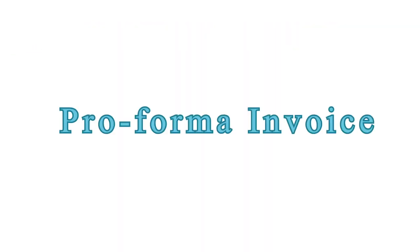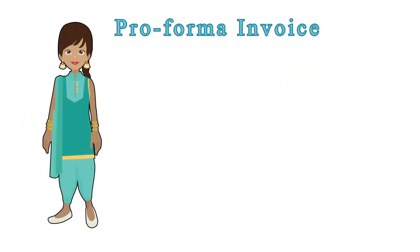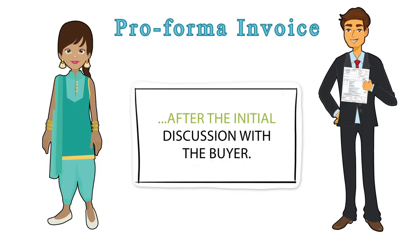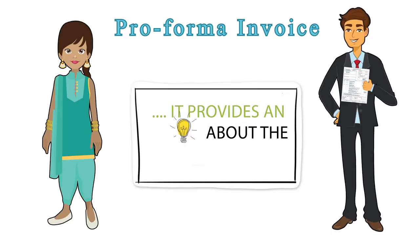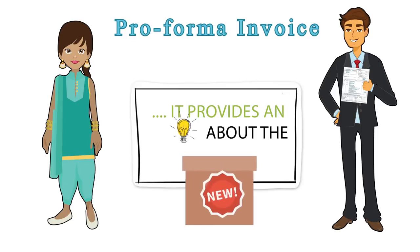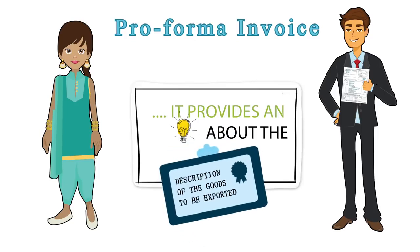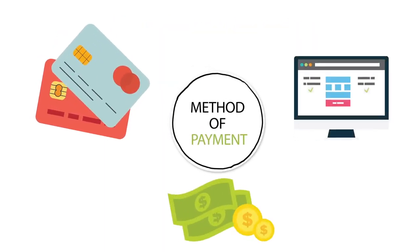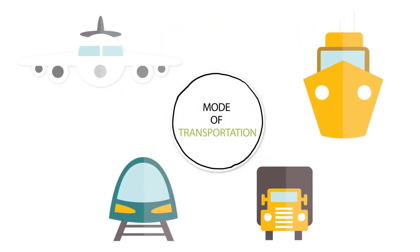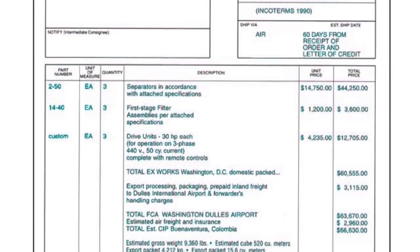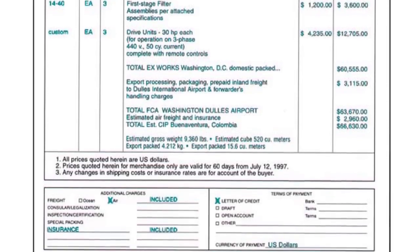Pro-forma Invoice. Nikku needs to send a pro-forma invoice to the buyer after the initial discussion with the buyer. It provides an idea about the prices, quality, quantity, and description of the goods to be exported. It also lays out the method of payment, mode of transportation, process of packing goods, packing material to be used, etc.